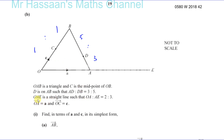Then it says OAE is a straight line such that OA to AE is 2 to 3, so that's 2 parts and 3 parts, giving 5 parts altogether. Here we have 2 parts altogether, and here we have 8 parts altogether. That's how the lines are divided.